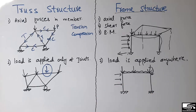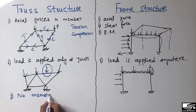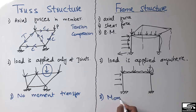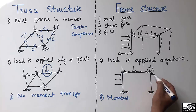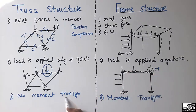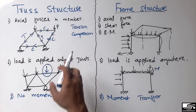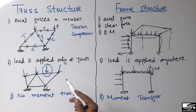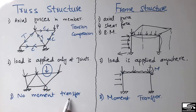The other difference is that the truss structure does not allow moment transfer — no moment transfer takes place at the joints. In the frame structure, moment transfer takes place at the joint depending on the internal joint condition. In a truss structure, there is no shear force or bending moment, so there is no moment transfer at the joint, while in a frame structure, moment transfer does occur at the joint.